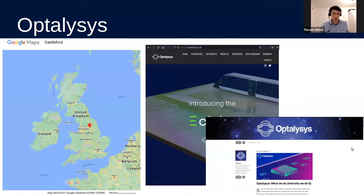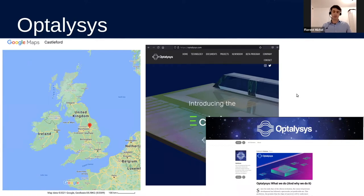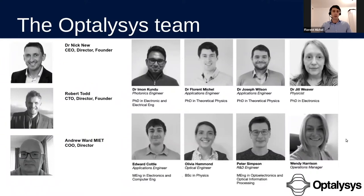We are a small 11-person company located in the north of England — specifically West Yorkshire, not far from Leeds. Of course, what I can say in one hour can only scratch the surface of what we are doing, both in the encryption space and on other topics. If you're interested and would like more information, please have a look at our website, optalysis.com, and our Medium page, which has articles on encryption, artificial intelligence, computational fluid dynamics, and other topics involving Fourier transforms.